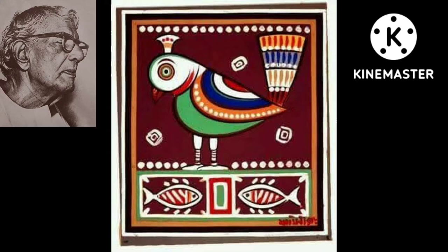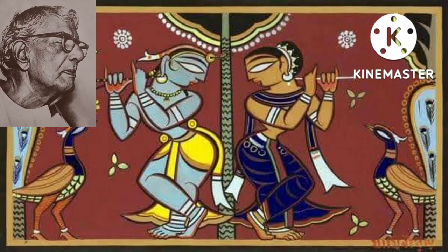Jamini Roy has a specific style of painting. His paintings that belong to the early 1920s reflect the influences of the Bengal School of Art. Initially, he came up with excellent paintings that marked his entry into the post-impressionist genre of landscape and portraits.